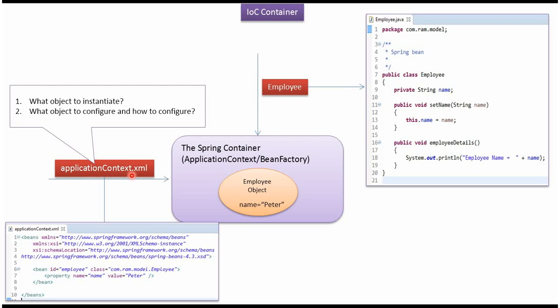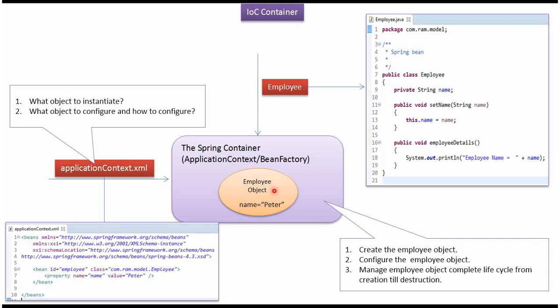This XML defines what object to instantiate, what object to configure, and how to configure. In this case, we have to create an employee object and the name property should be set as Peter. The Spring container reads this XML file, creates the employee object, configures the employee object, and manages the employee object's complete lifecycle from creation till destruction. Spring container is nothing but an IOC container.